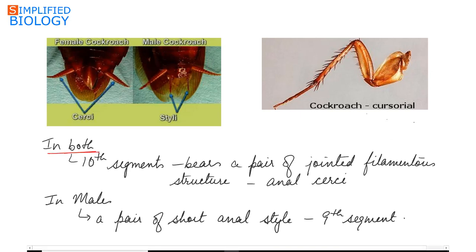In both male and female, at the tenth segment is a pair of jointed filamentous structures called the anal cerci. It is a filamentous structure called the anal cerci. While in the males, present at the ninth segment is a pair of short anal styles. Now these are the anal styles.